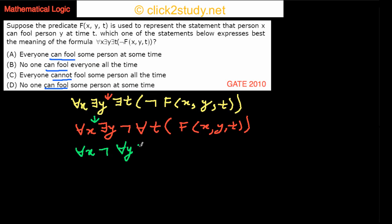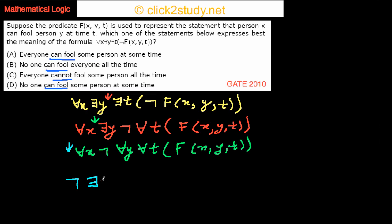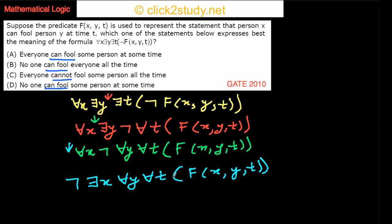For all T, the rest is copied down as earlier. In the final step, the negation goes inside and this becomes a negation of F. Now for all X becomes there exists X, giving us: there exists X, for all Y, for all T, and F(X, Y, T). So we have the formula in different equivalent forms and one of them should match our options.